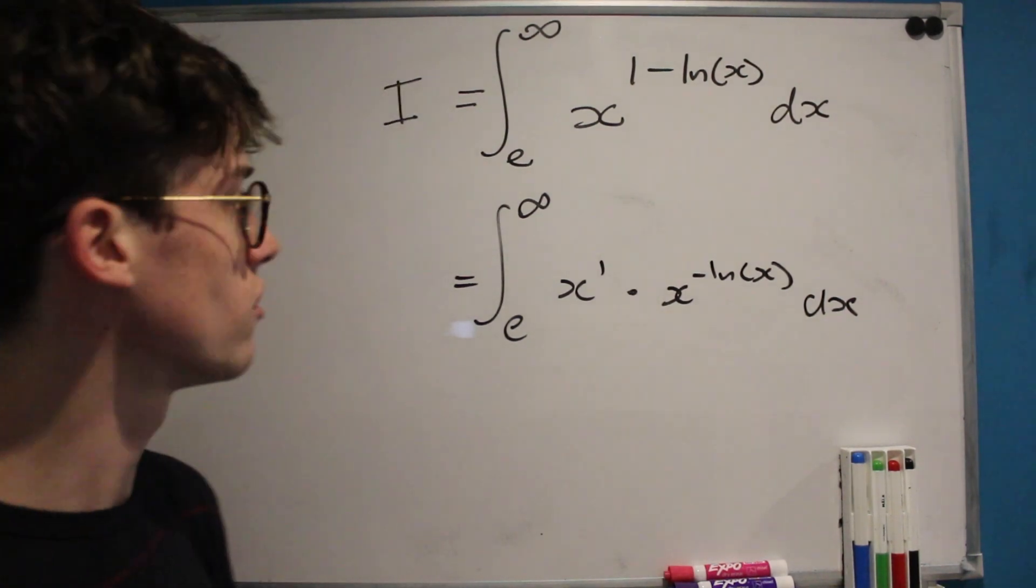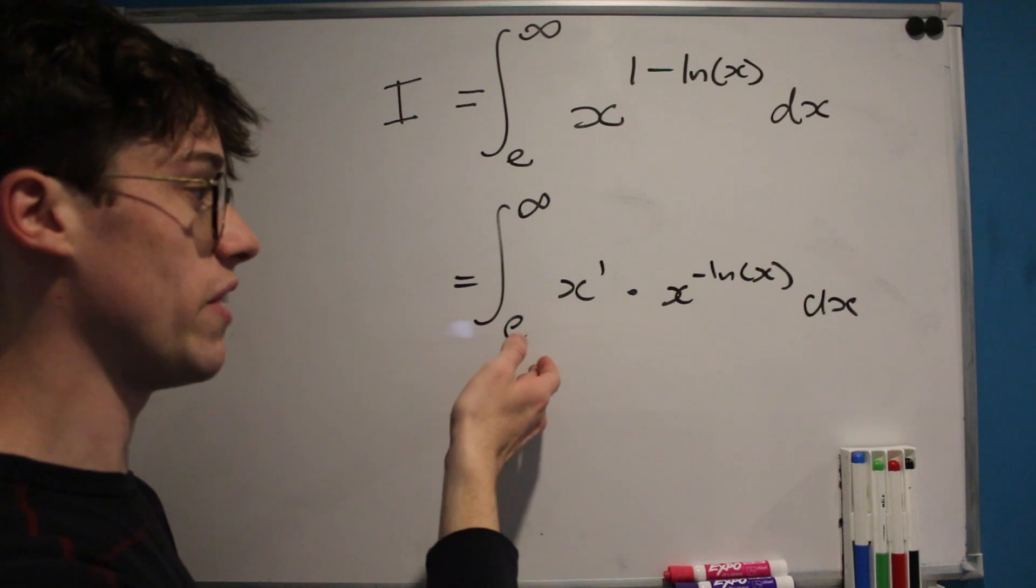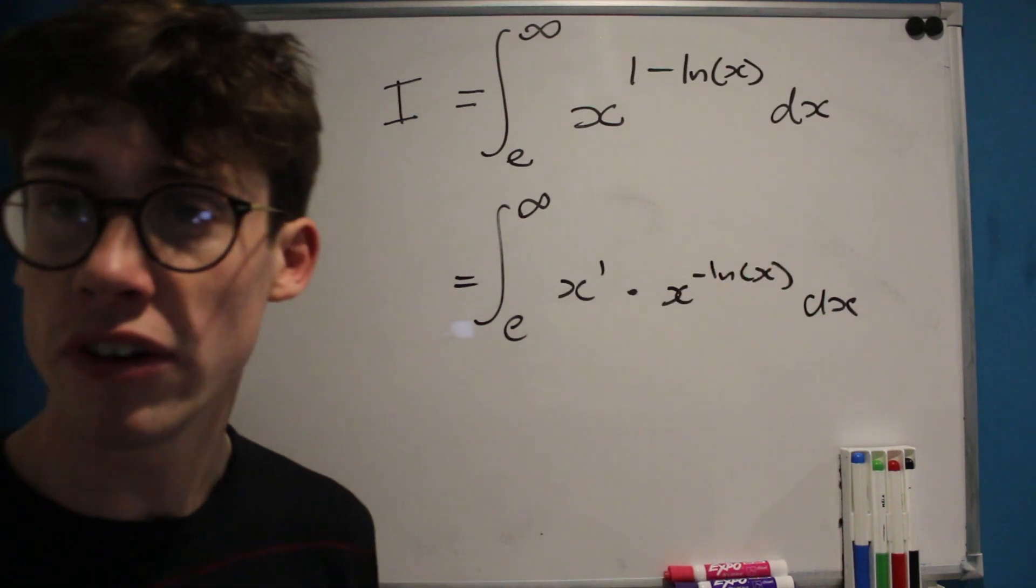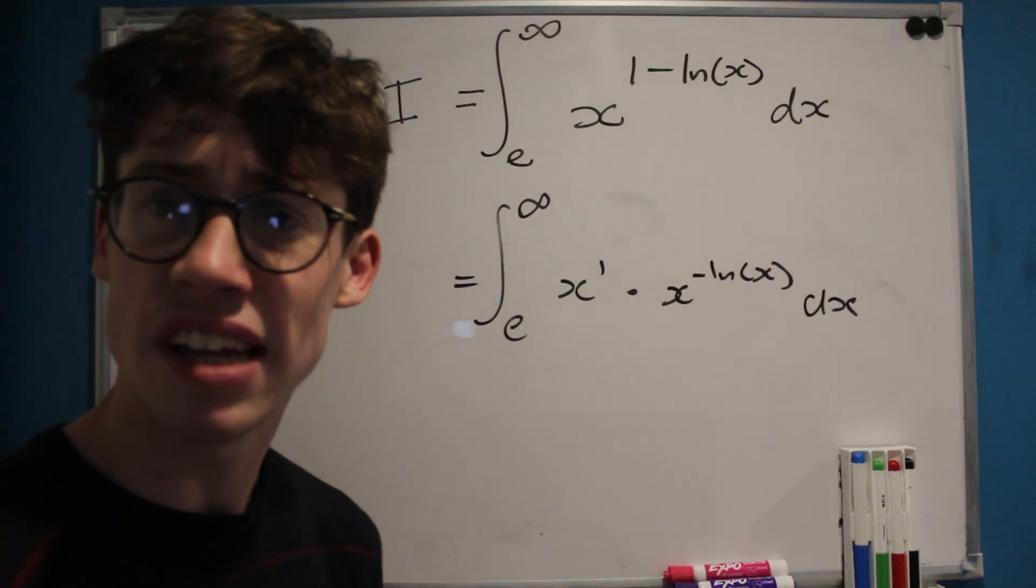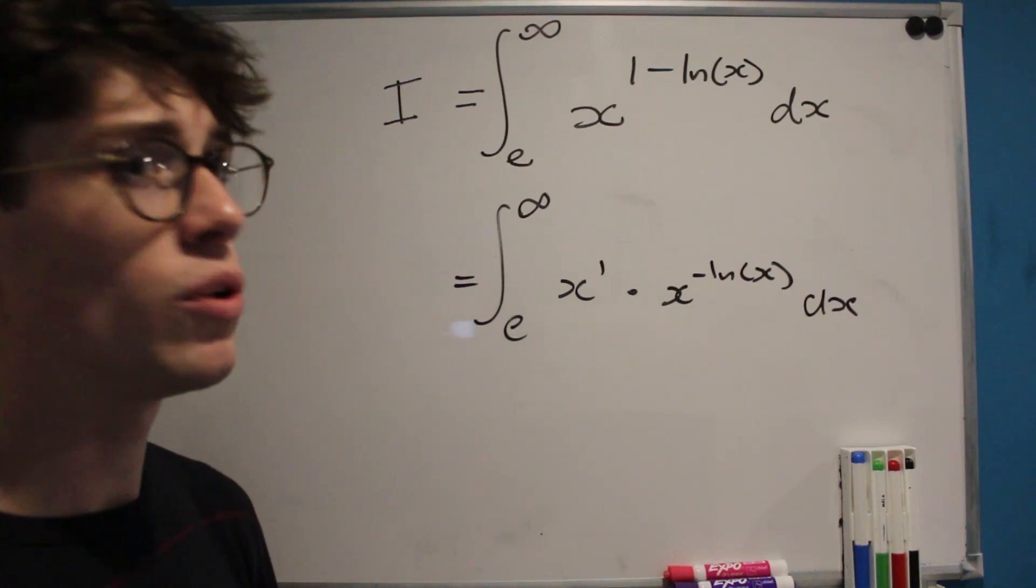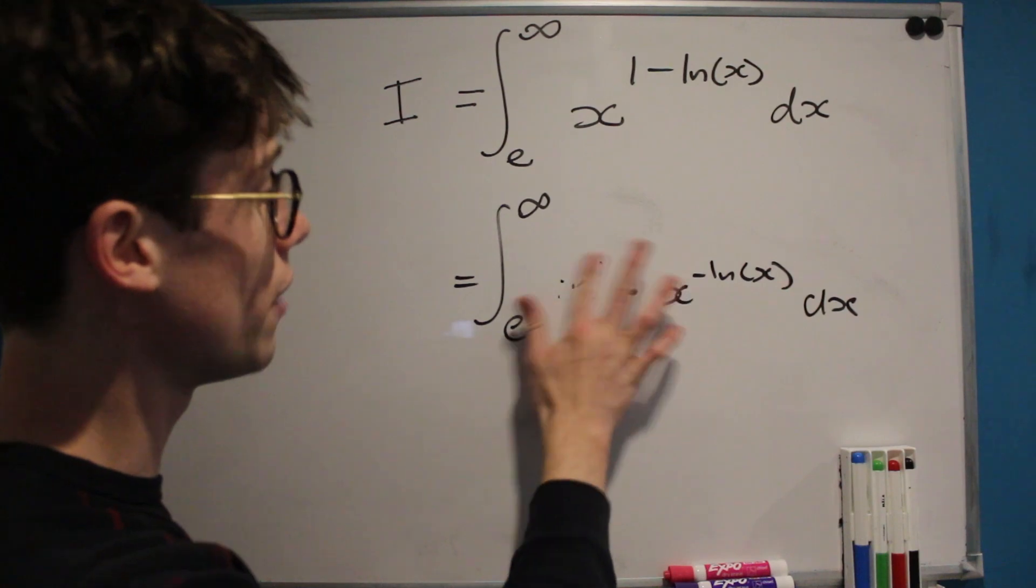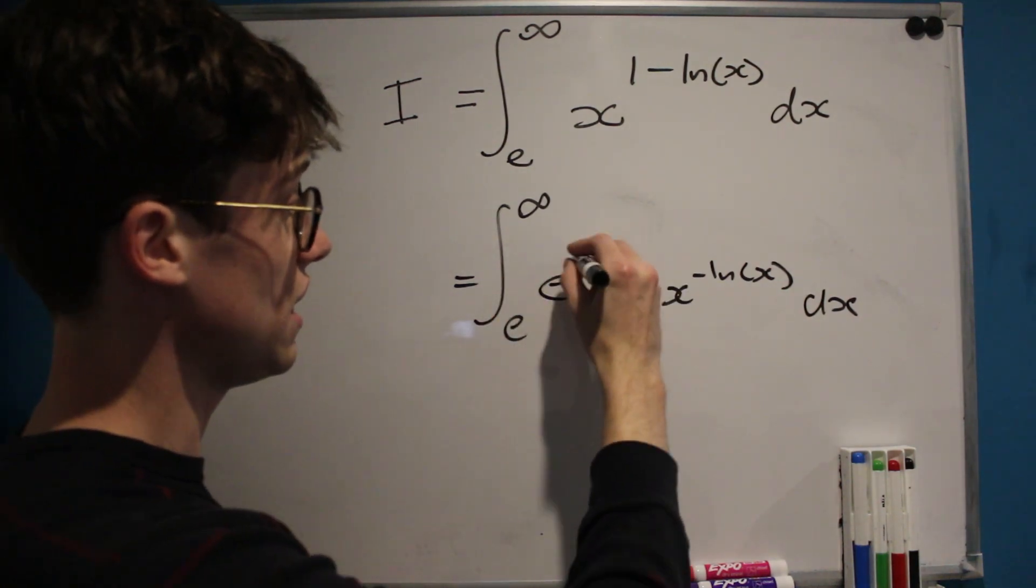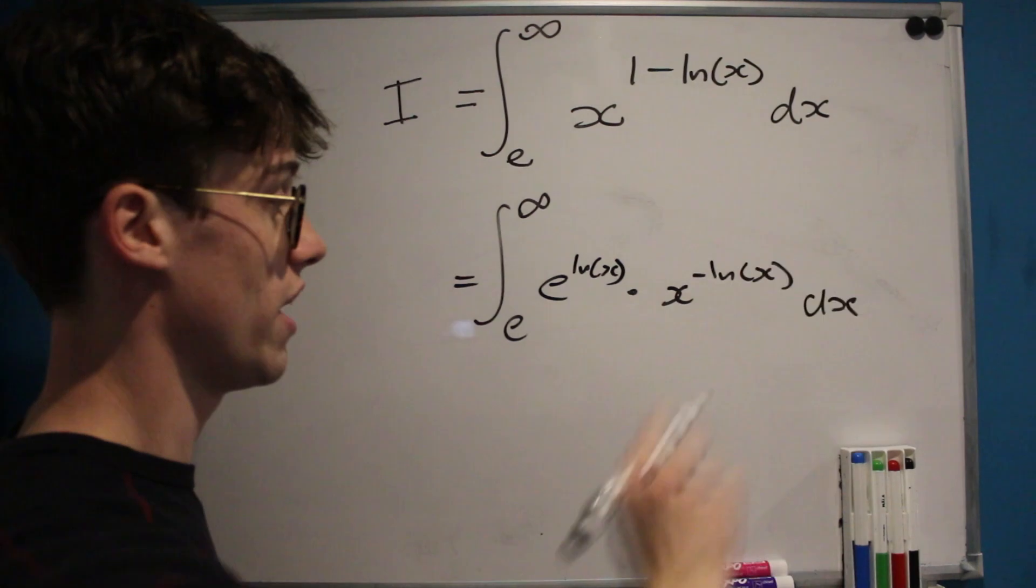And that next step is something we should always think about when we have a lower bound of e and when we see natural logs involved in our integrals: will it be advantageous to us to rewrite our terms in the integrand with a base of e. And what I mean by that is that we can write x as e to the power of the natural log of x,